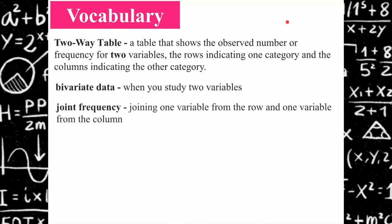In a bivariate data table or a two-way table, you have joint frequencies. It's when you join one variable from a row with a variable from a column — meaning this person said that they were male and that they liked chocolate ice cream. This is the number of males surveyed that like chocolate ice cream, so it joins two parts of the categories.